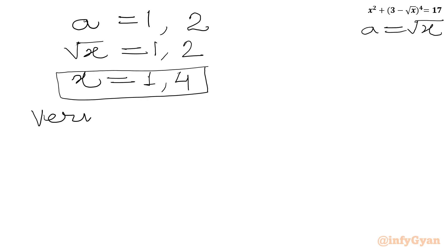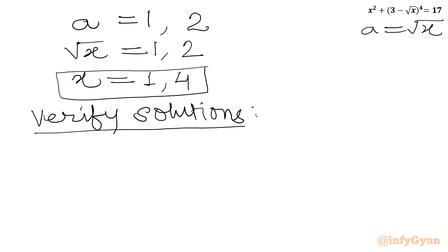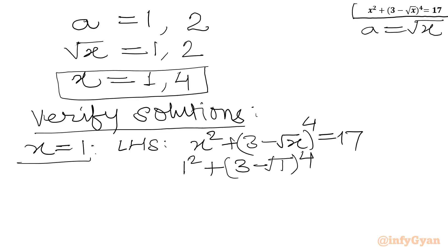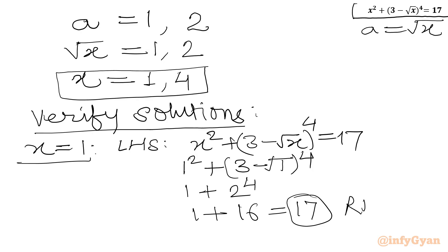Let's verify our solutions. For x equals 1, substituting into the LHS: 1² plus (3 minus √1)⁴ equals 1 plus (3 minus 1)⁴ equals 1 plus 2⁴ equals 1 plus 16 equals 17, which equals the RHS. Hence x equals 1 is a verified solution.